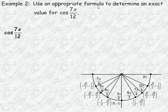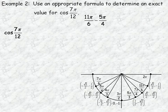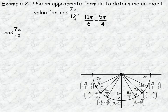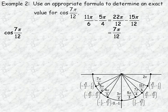In Example 2, we find an exact value for cosine(7pi/12). We need two angles that add or subtract to 7pi/12. Writing all unit circle angles over a denominator of 12 helps. Two angles that subtract to 7pi/12 are 11pi/6 and 5pi/4: converting to twelfths gives 22pi/12 minus 15pi/12 equals 7pi/12. So we use the cosine difference identity on cosine(11pi/6 minus 5pi/4).